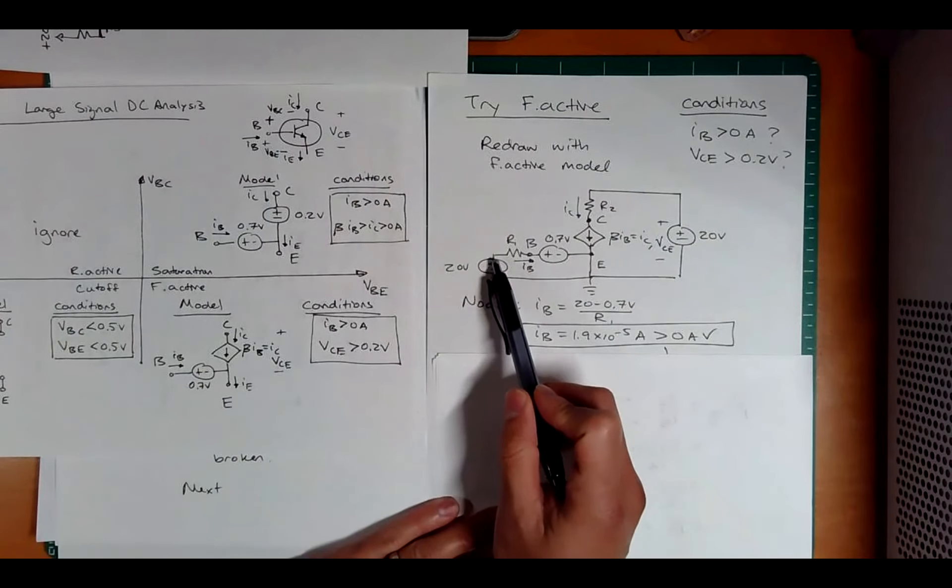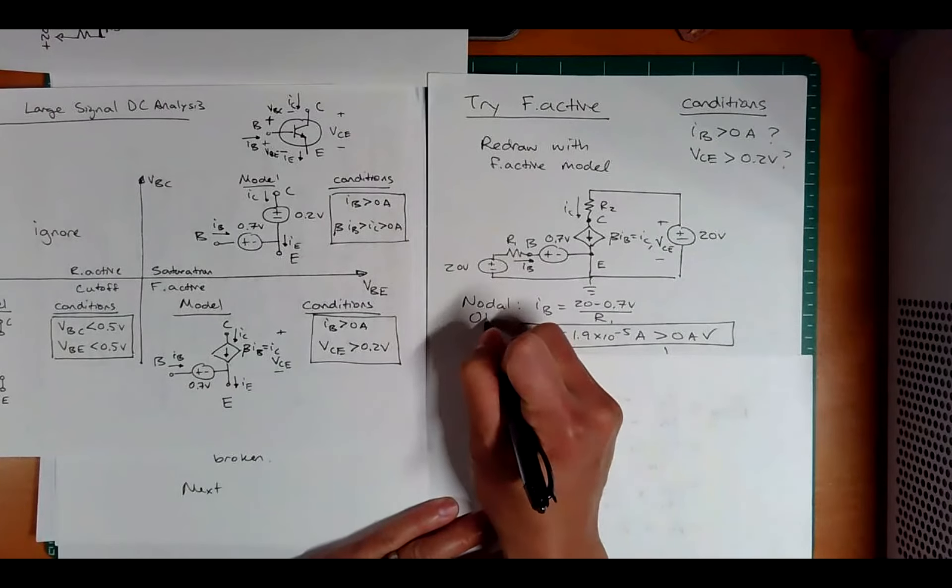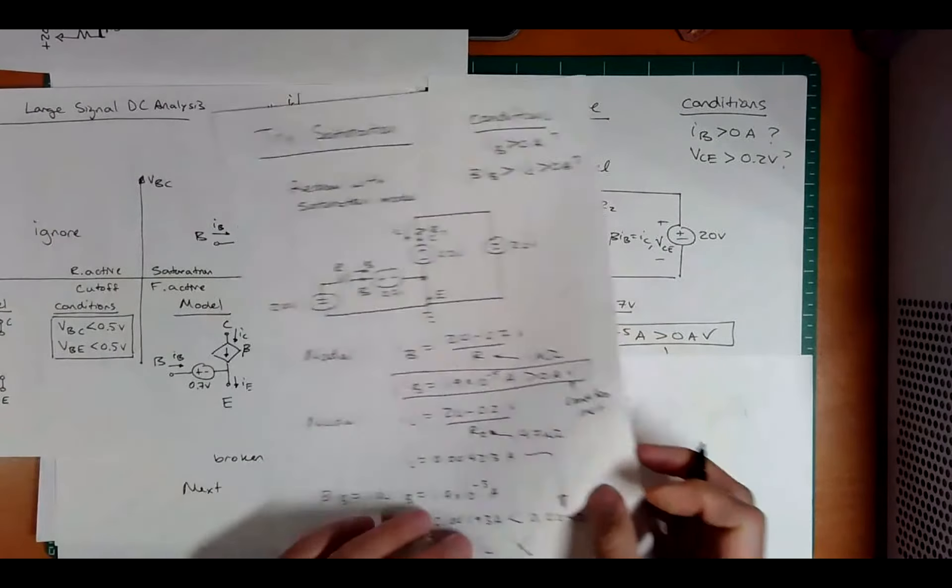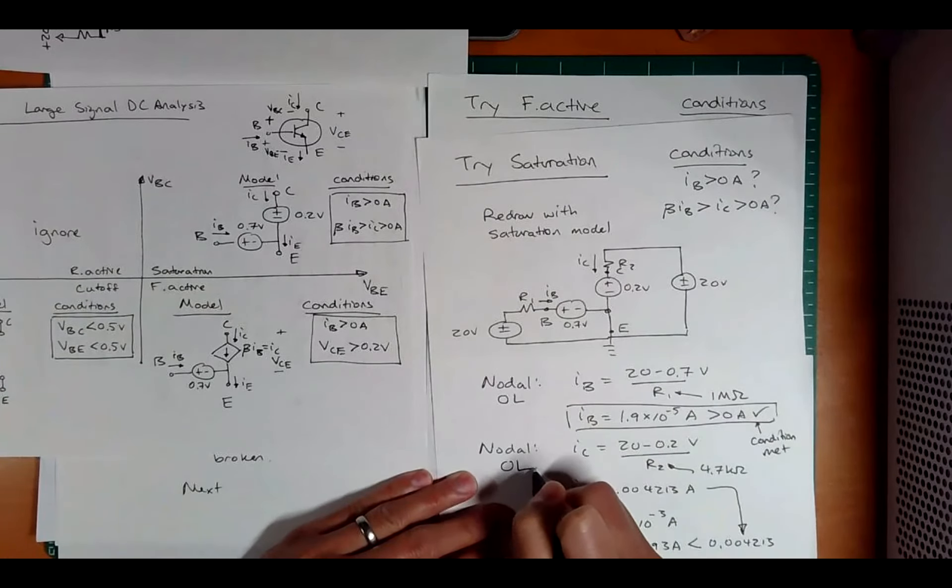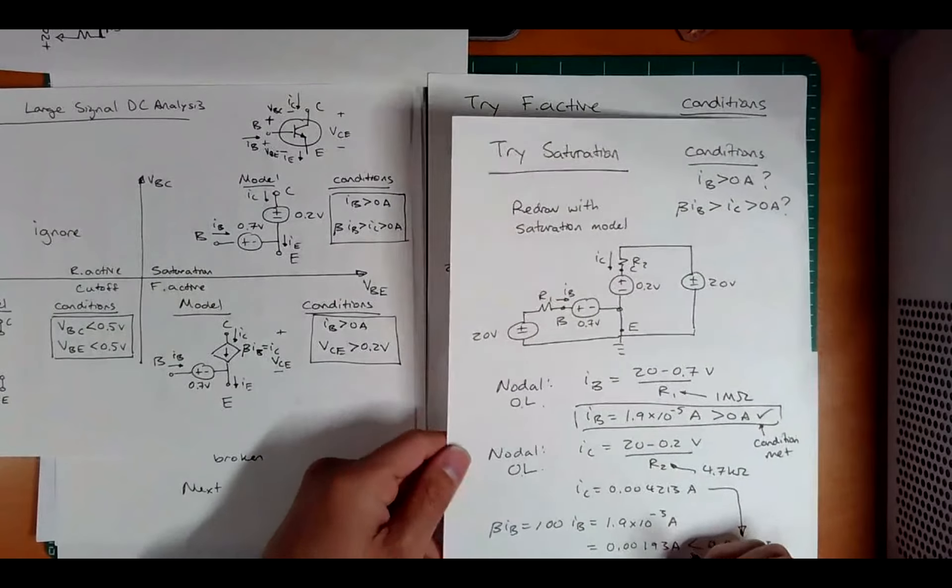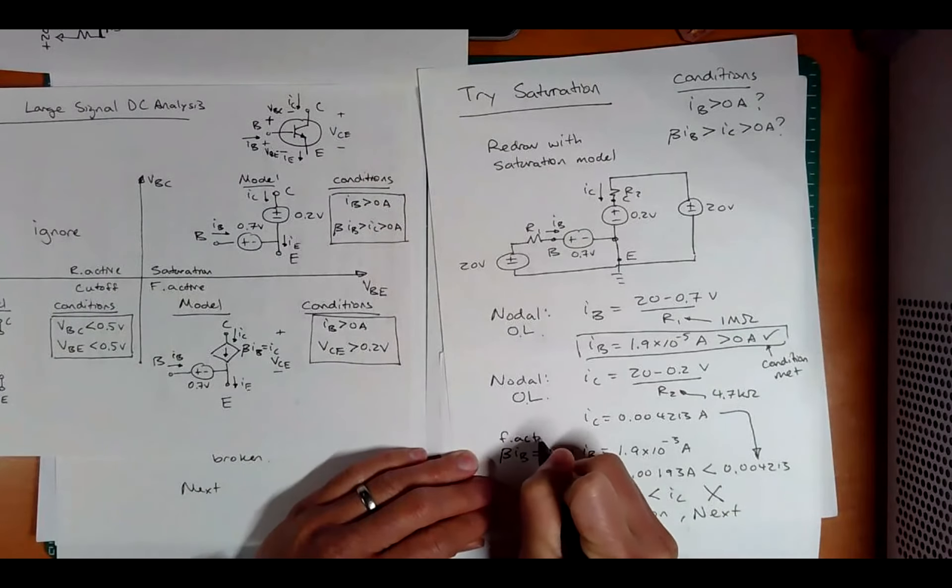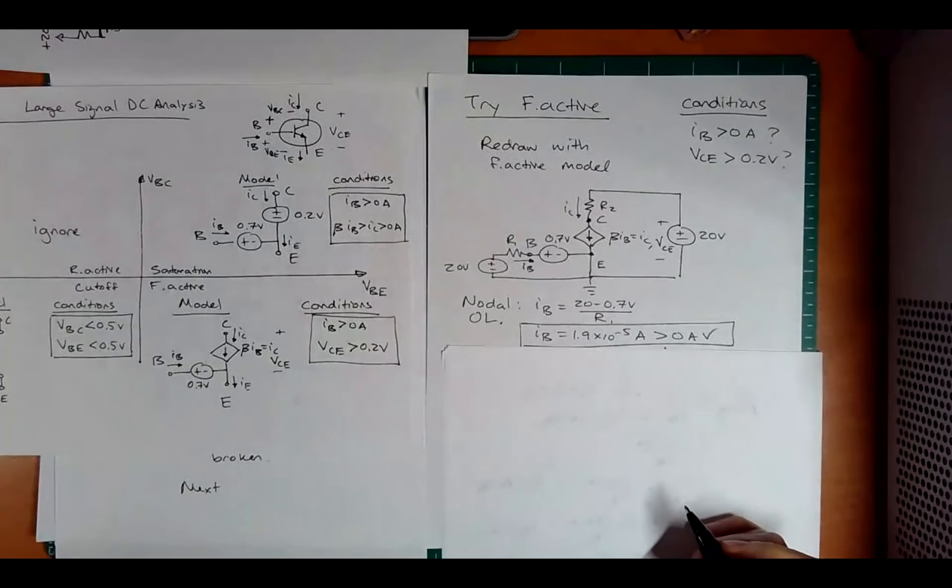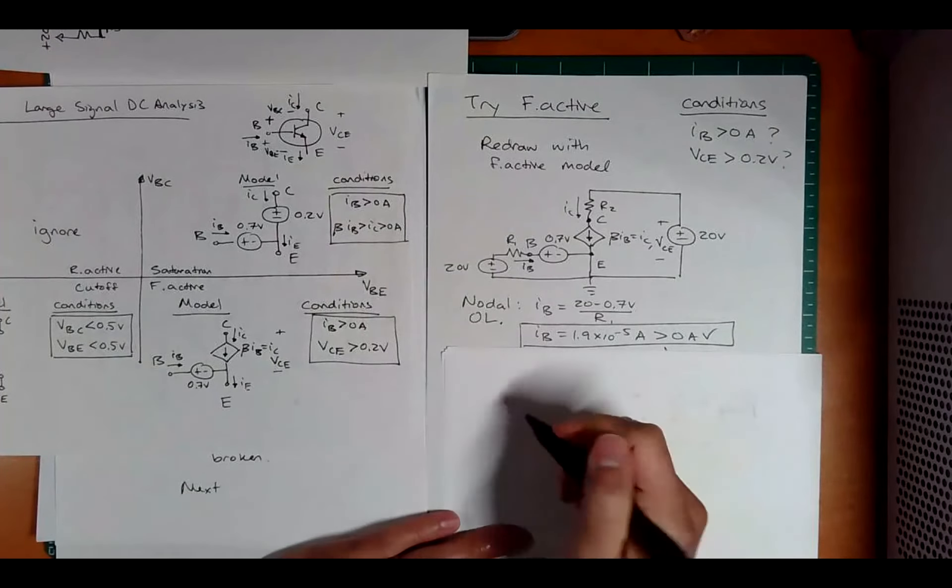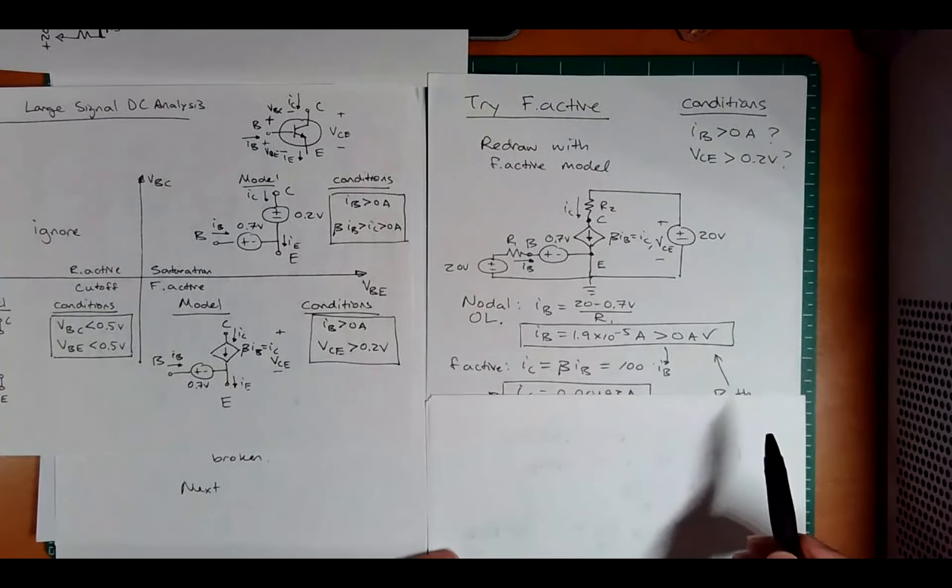Let's first check is the current positive. And again, it's the same as before. Look at this. It's the nodal Ohm's law. IB equals 20 minus 0.7 over R1. And I should put nodal Ohm's law, in fact. Nodal Ohm's law. So make sure that you're writing all your steps. So I have my nodal Ohm's law, 20 minus 0.7 over R1. Positive number.